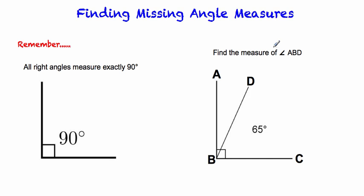A little bit more on finding angle measures. This time, we're working with complementary angles. All right angles measure exactly 90 degrees. That's something you just need to memorize. That's a good thing to write down in your notebook again. In this case, we need to find the measure of angle ABD.